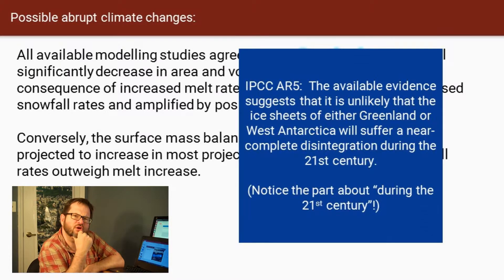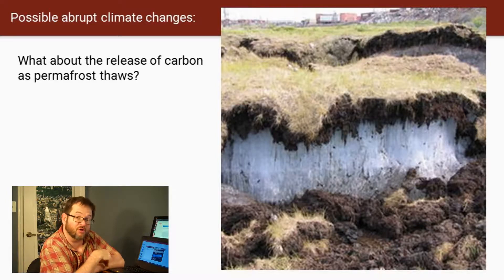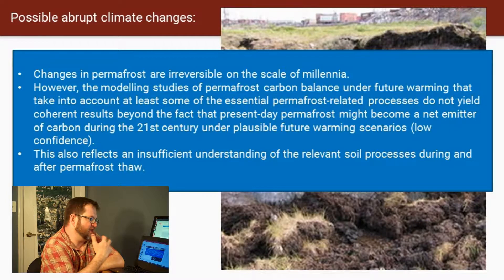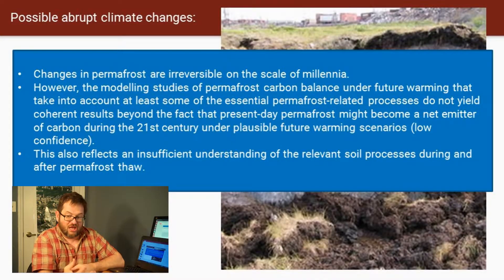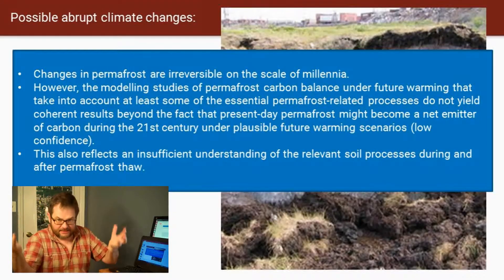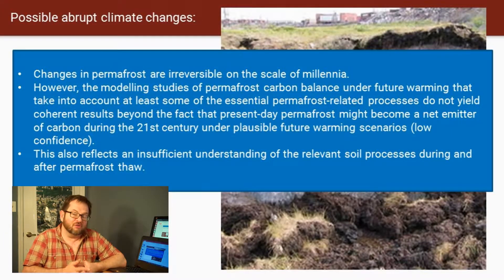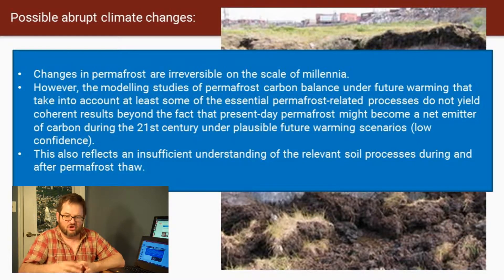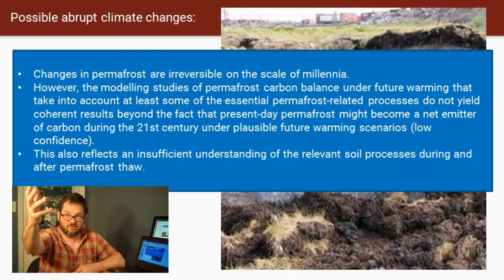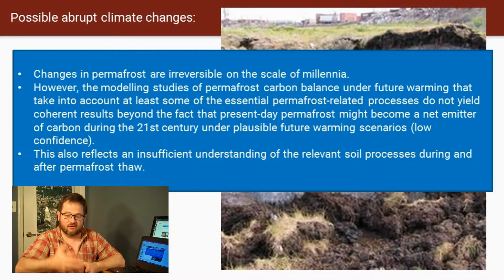Let's talk about some more doomsday scenarios with regard to possible ways climate could change in the more distant future. One is the release of all the carbon stored in permafrost. There's an obvious feedback here — warmer climates mean permafrost melts, which causes more carbon to be released into the atmosphere as bacteria take advantage of organic material frozen in the permafrost. Changes in permafrost are basically irreversible, certainly not on the scale of millennia. It takes a very long time to get carbon back out of the atmosphere and stored as permafrost — through plants, decaying vegetation, and then freezing in the soil.